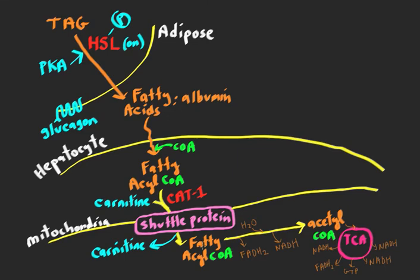Once the fatty acyl-CoA is in the mitochondrial matrix — in this case, the liver — there are four steps: an oxidation producing an FADH2, a hydration, another oxidation, and then ultimately a cleavage releasing acetyl-CoA. The fatty acid is now shortened by two carbons. That acetyl-CoA can enter the TCA cycle, where we make NADH, FADH2, and even a GTP. All of these electron carriers go into the electron transport chain and generate ATP.